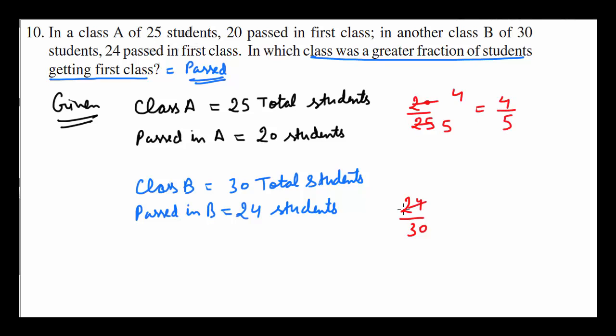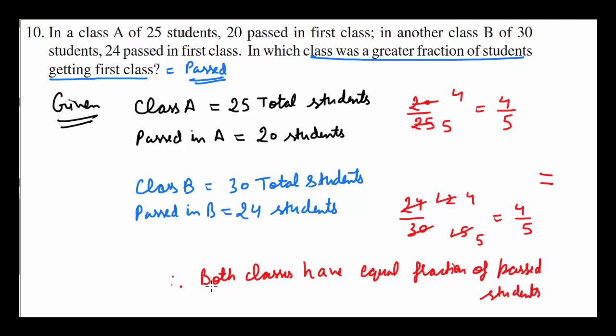Again, here also you get 12 to the 24 and 15 to the 30. Again, 4 over 5. Hooray. We got both the same fractions. So both fractions are equal. Therefore, 4 over 5. Both classes have equal fraction of past students. That is your answer.